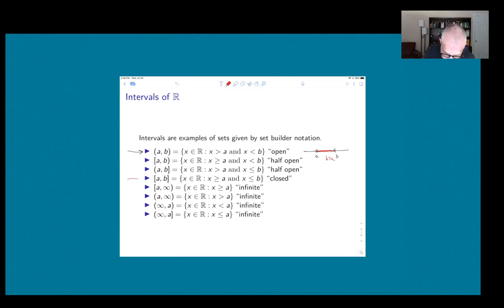So this one here is the set of real numbers which are bigger than or equal to a and less than or equal to b. So if we were going to draw that picture here, this time we would include the endpoints a and b.